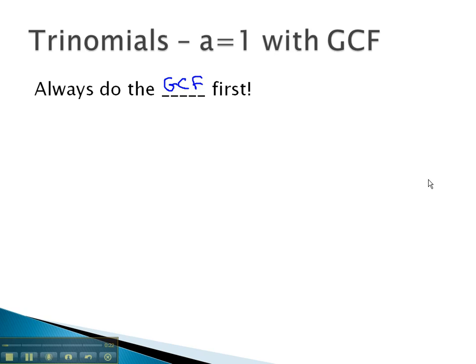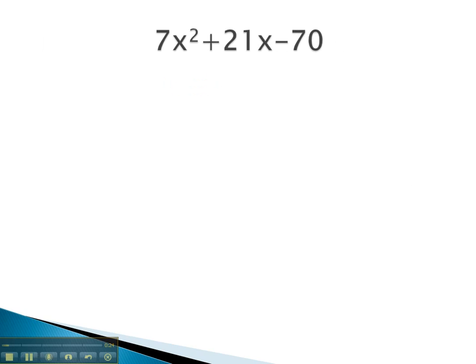For example, in this problem, we see 7x squared plus 21x minus 70. We see that each term is divisible by 7. Factoring out the 7 will leave us with x squared plus 3x minus 10.